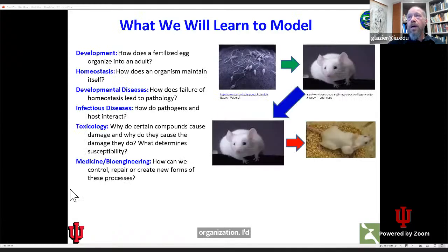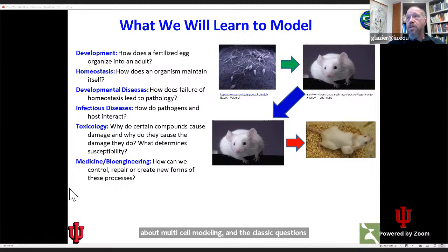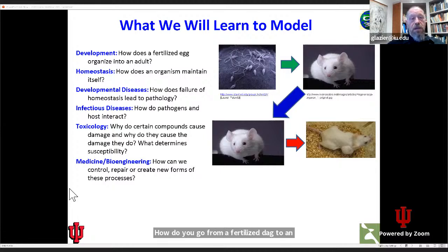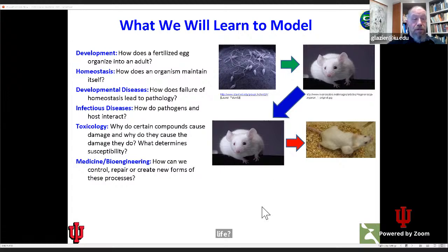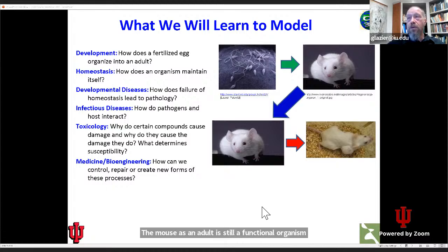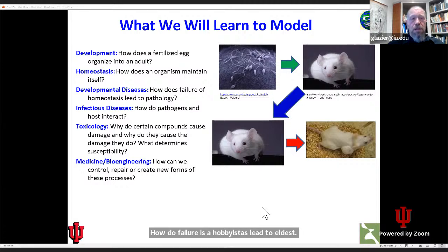This course is going to talk about multi-cell modeling. The classic questions in multi-cell modeling have to do with organismal development — how do you go from a fertilized egg to an adult organism? What's called homeostasis in biology: how do you maintain the structure and function of an organism through its life? This picture of a mouse is the same picture twice because even though the components of the mouse aren't the same, the mouse as an adult is still a functional organism that persists. How do failures of homeostasis lead to illness? The classic example of a developmental disease would be cancer.